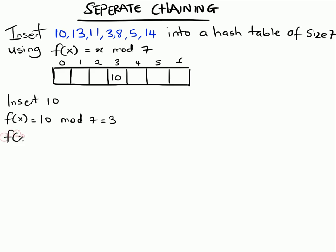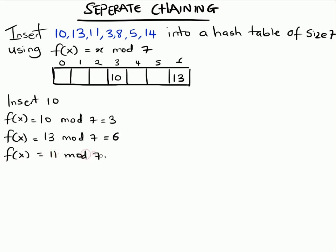The next one: f(x) of 13 — 13 mod 7 equals 6, and we're going to insert that at position 6. The next one: f(x) of 11 — that's 4, so we're going to insert it at position 4.